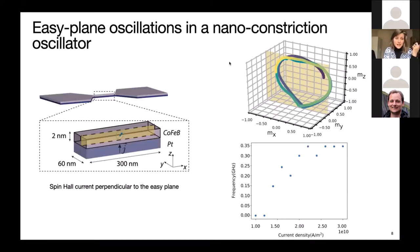Then in a second time, we show that this anisotropy properties can be conserved in the nano constriction architecture, and we choose geometry parameters that can be realized with e-beam lithography, so 60 nanometer width and 300 nanometer length. And then we see that for critical currents of about 1.5×10^10 ampere per square meter, which is comparable to current densities that are used in spin torque nano oscillators, we obtain these nice big circular oscillations in the easy plane.